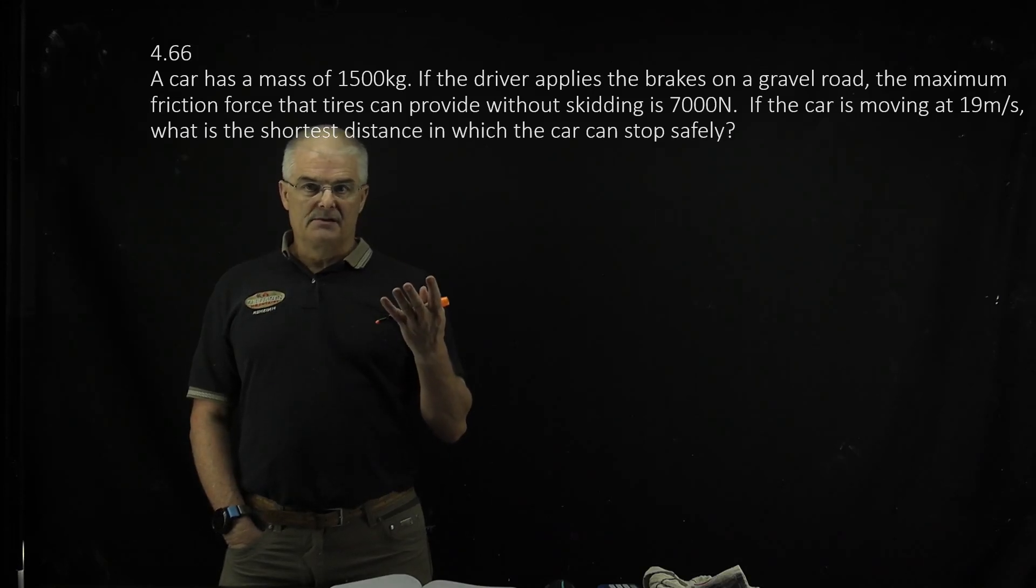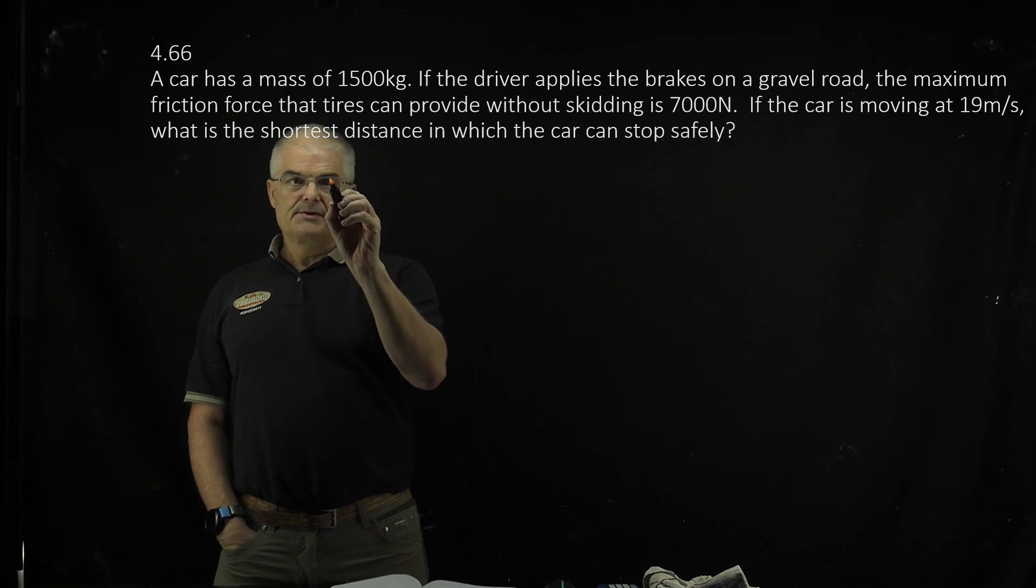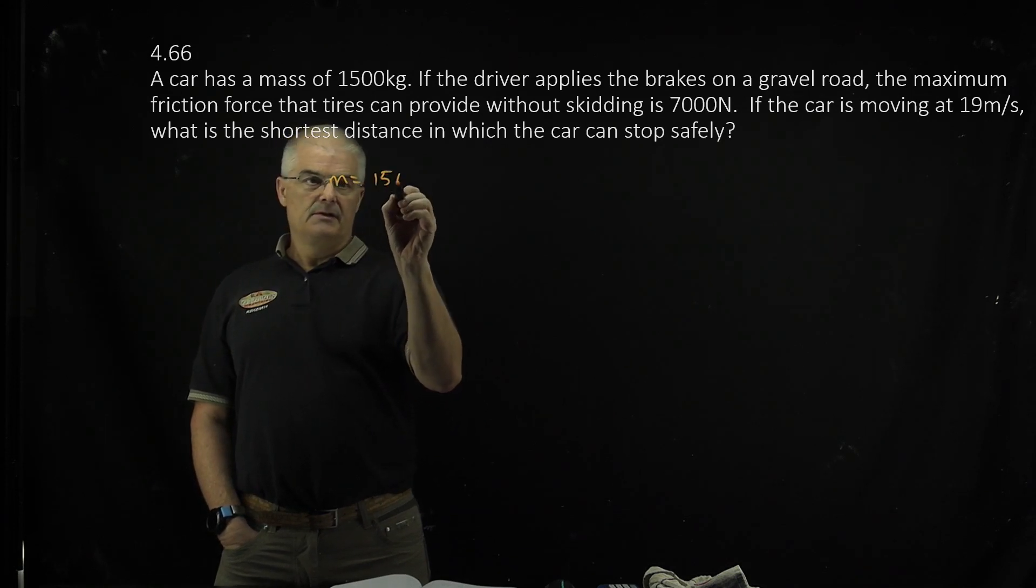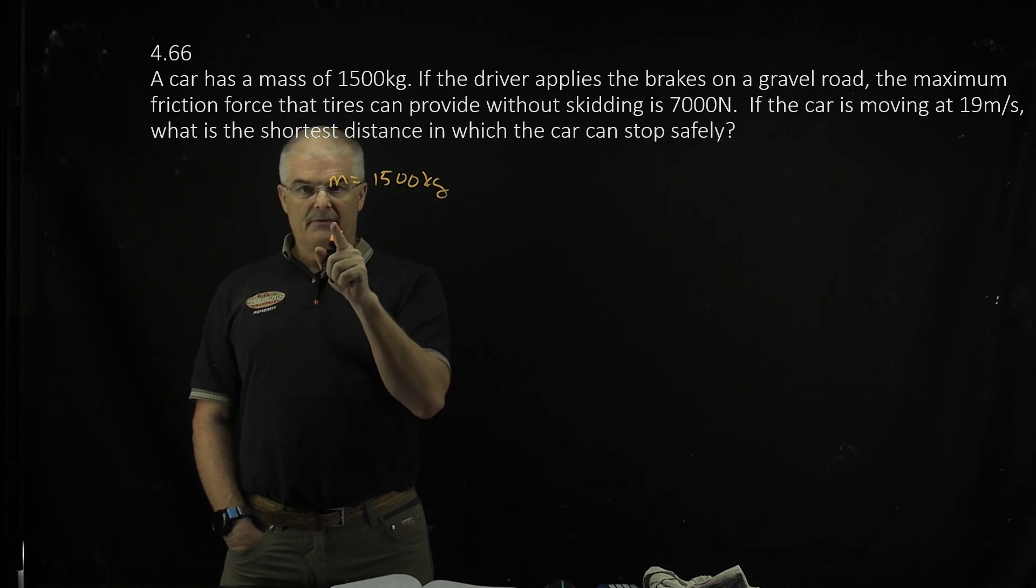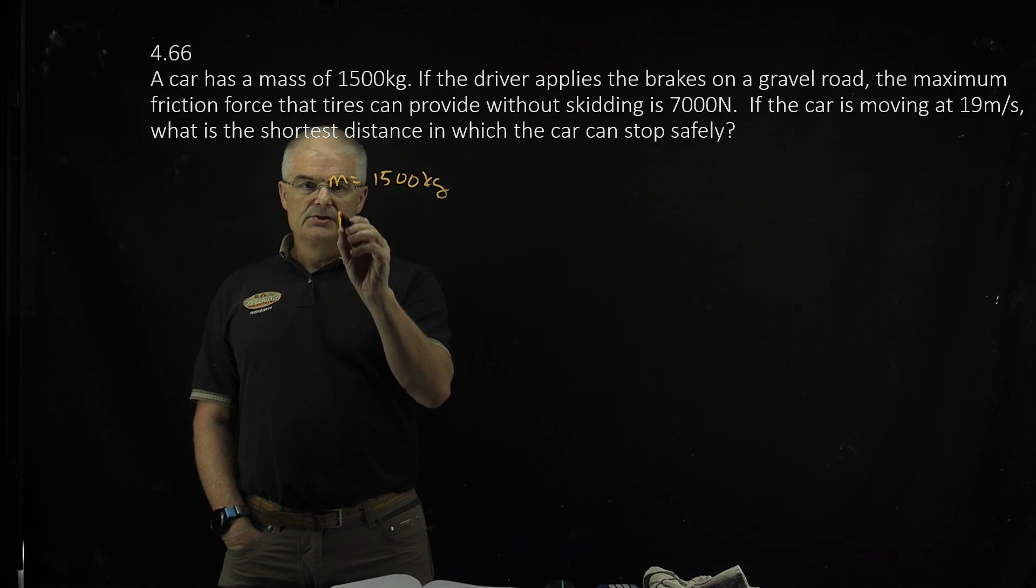We've got a car with a mass of 1,500 kilograms. So what do I know? I know mass equals 1,500 kilograms. On the gravel, the maximum friction force that tires can provide, so F equals 7,000 newtons.